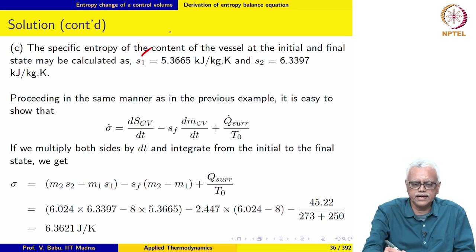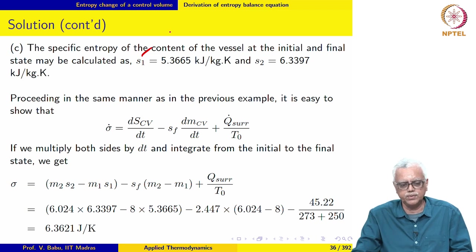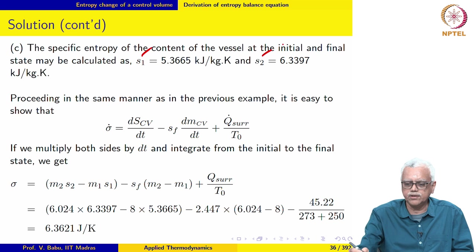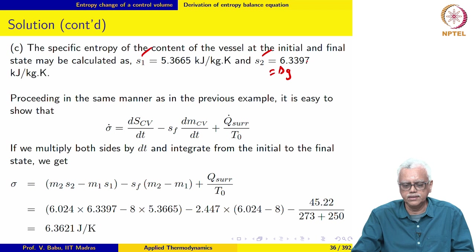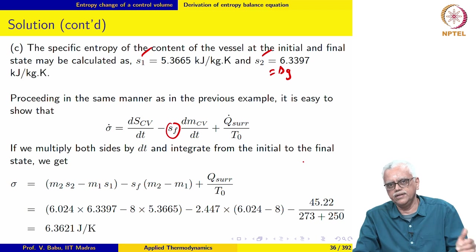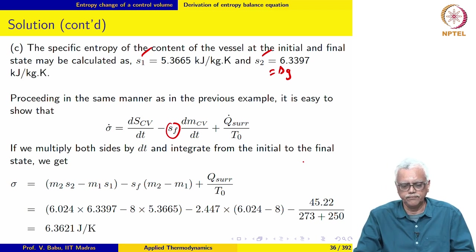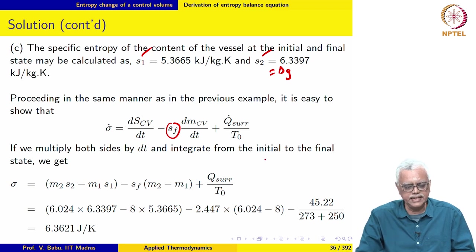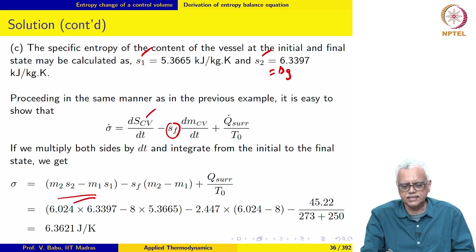Knowing the dryness fraction at the initial state, we evaluate the specific entropy s₁, and the specific entropy at the final state is simply sg. We apply the unsteady entropy balance, replacing sₑ with sf since saturated liquid alone leaves the control volume. Multiplying by dt and integrating — this is a perfect differential — and since sf is constant, the integration proceeds straightforwardly.